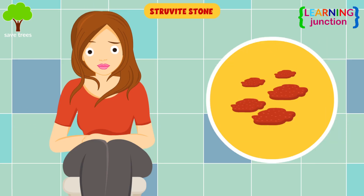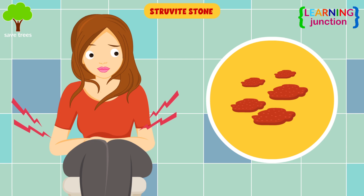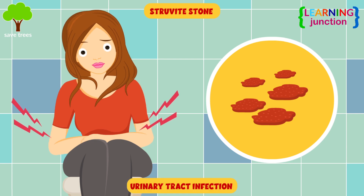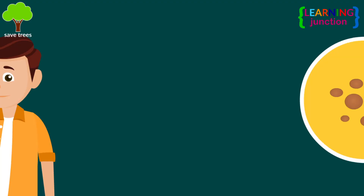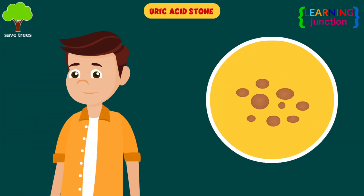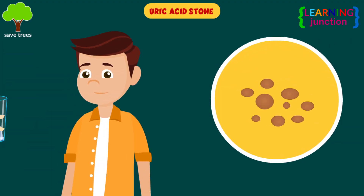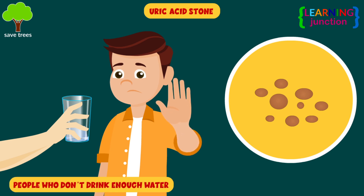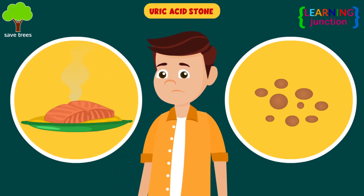Struvite stones are more common in women and form as a result of some type of urinary tract infection. Uric acid stones are most common in men and tend to occur in people who don't drink enough water or have a diet very high in animal protein.